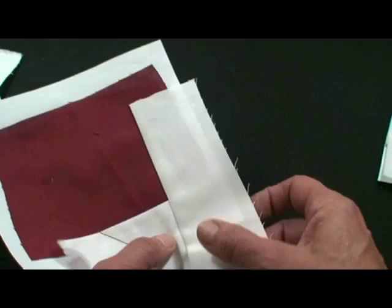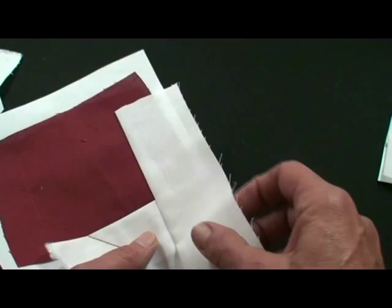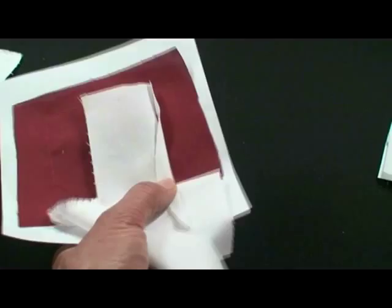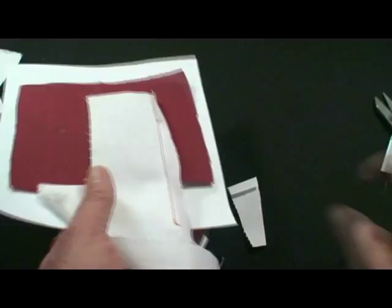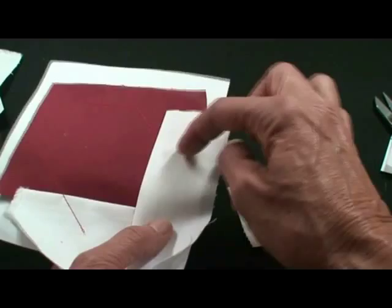Now when you're trimming, one of the problems with foundation piecing is you can't press the dark away from the light and so you'll get shadows. So what you can do is undercut the dark—cut it smaller than that seam—and then you won't get the shadow. See how when that comes out you won't see the shadow here but not here.